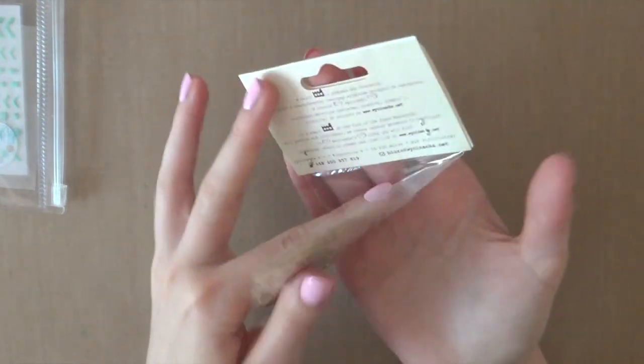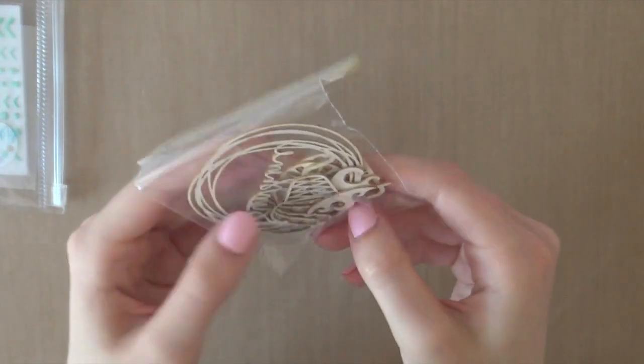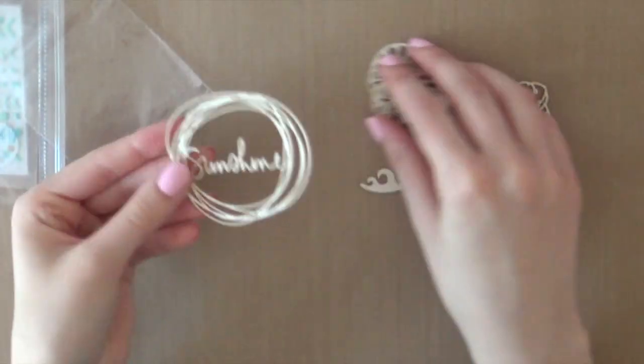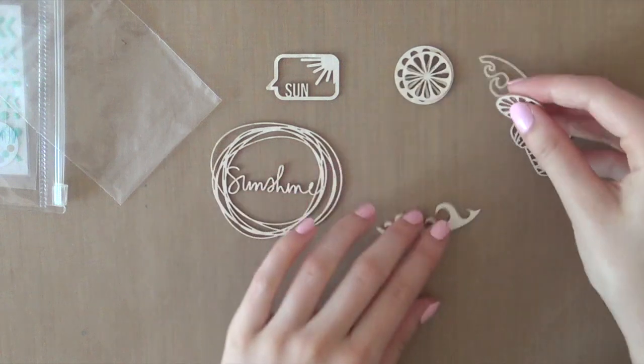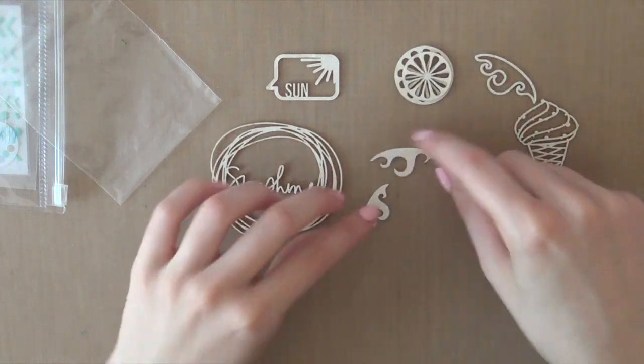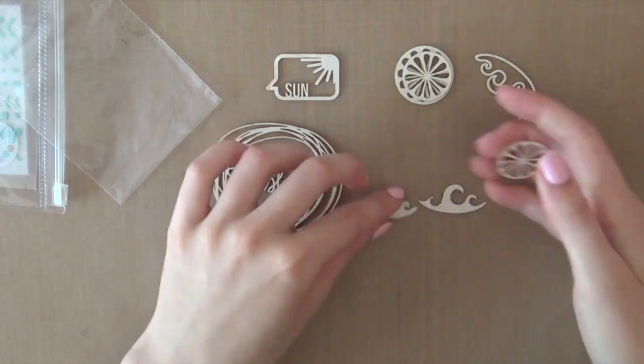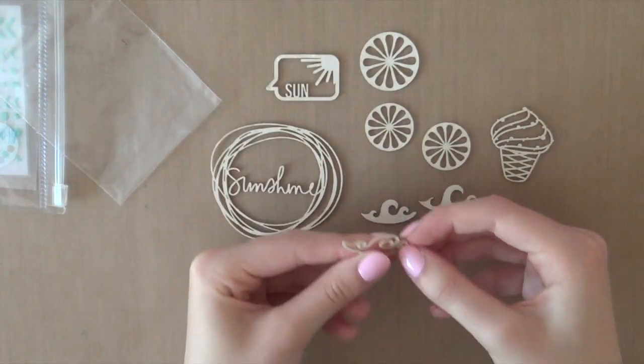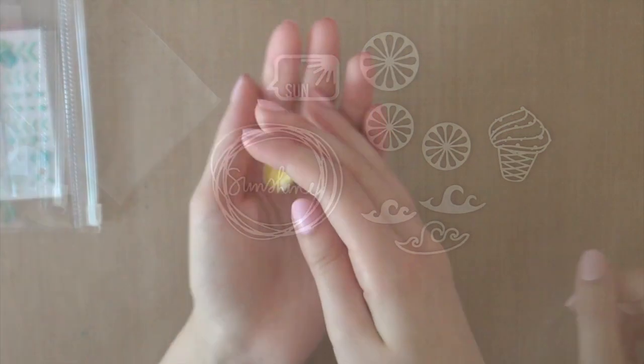And then there's also a little bag of chipboard pieces. This is chipboard but it actually looks like wood veneer and they're just so pretty and they're not too thick so they're super easy to adhere on cards or scrapbook pages. I also really like the shapes of these pieces.